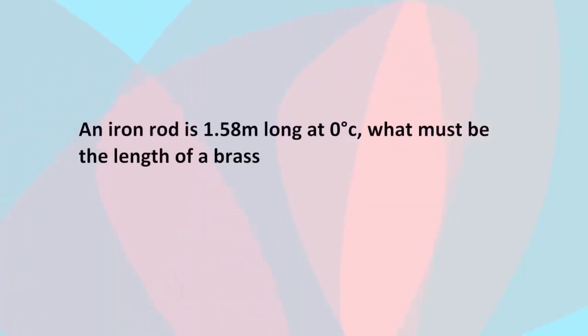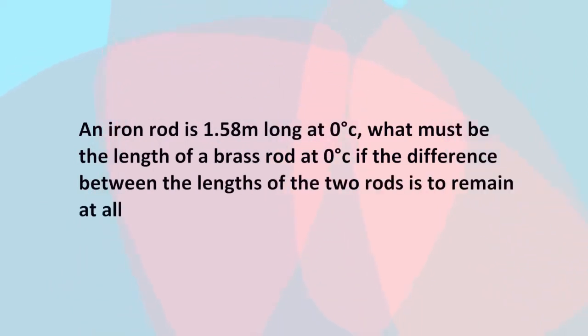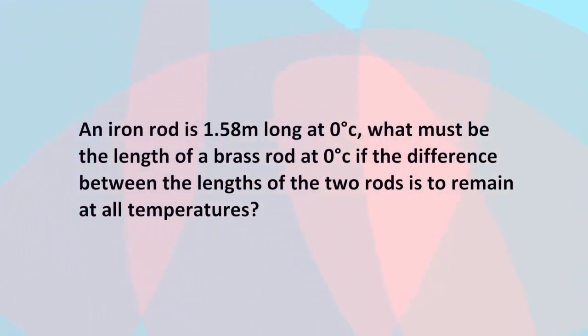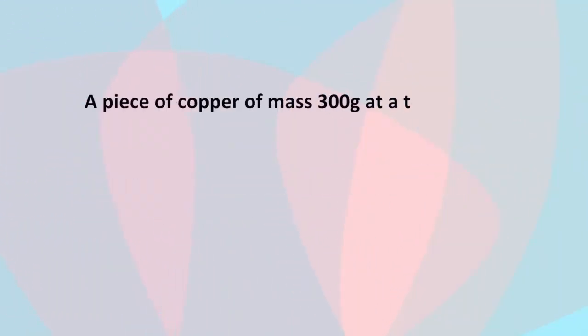I have two standard questions here: one on linear expansivity and the other on specific heat capacity. Question 1: An iron rod is 1.58 meters long at 0 degrees Celsius. What must be the length of a brass rod at 0 degrees Celsius if the difference between the lengths of the two rods is to remain the same at all temperatures?